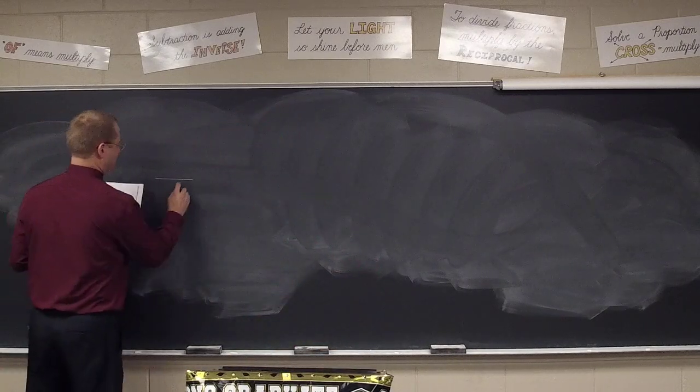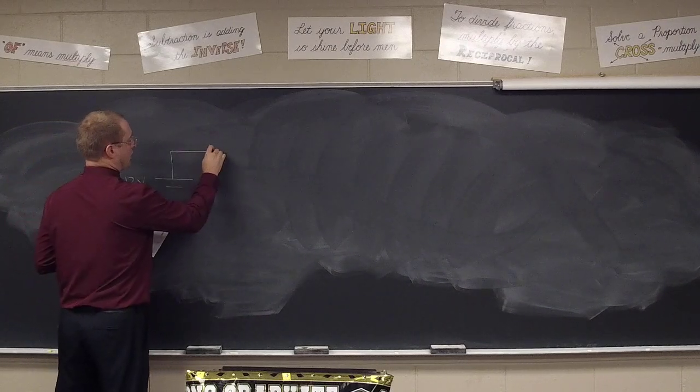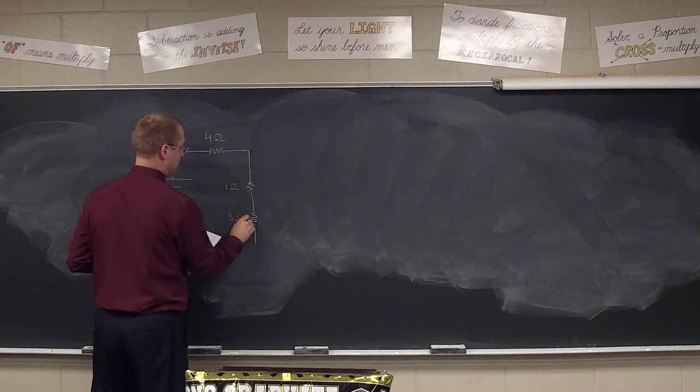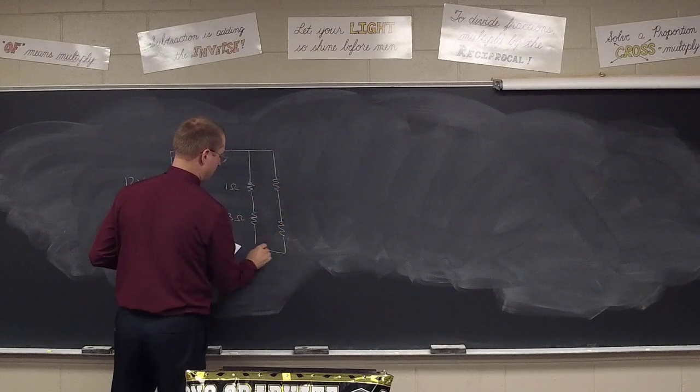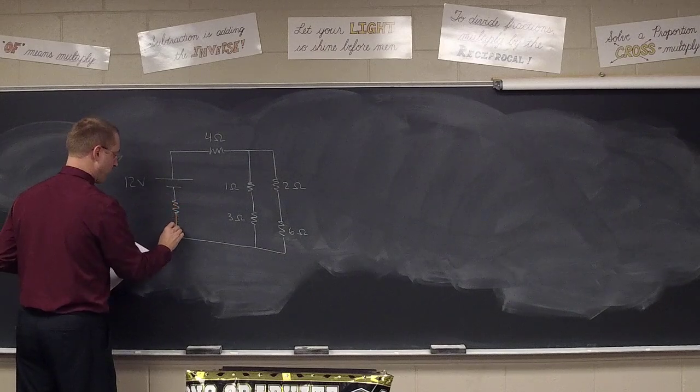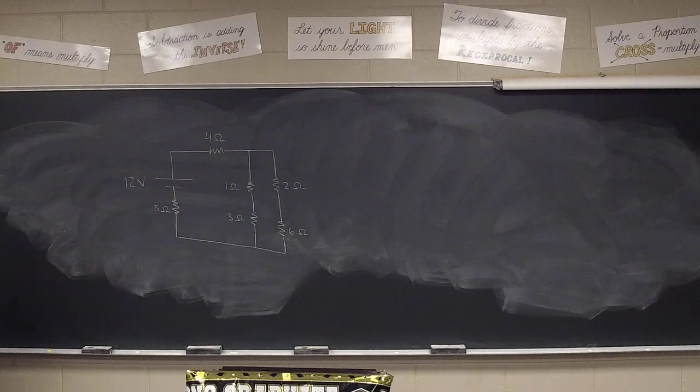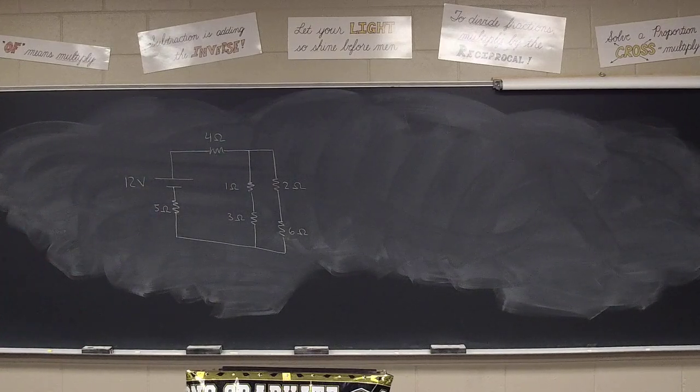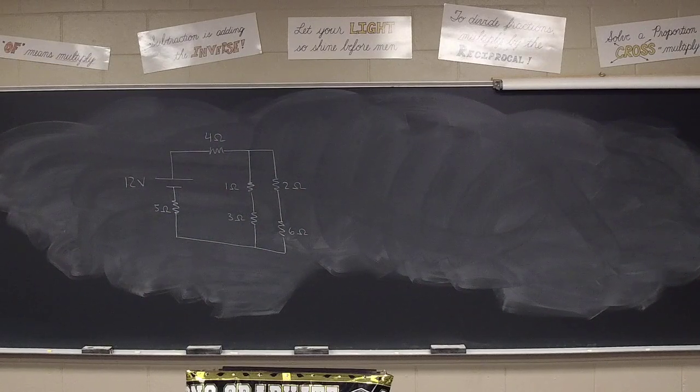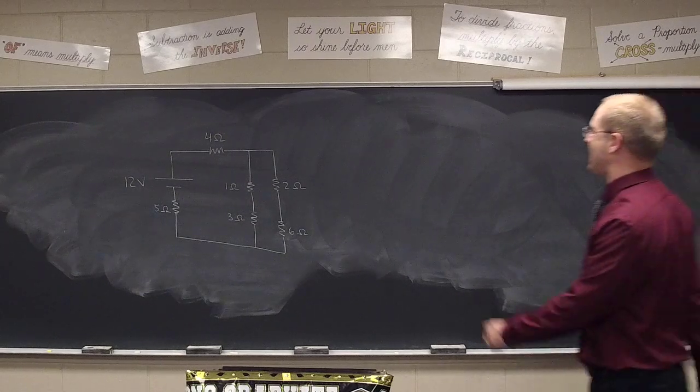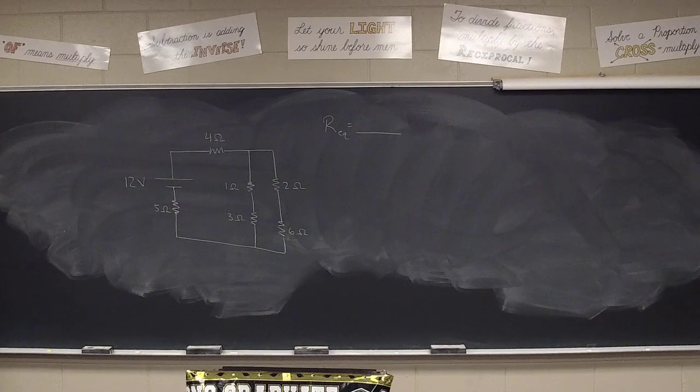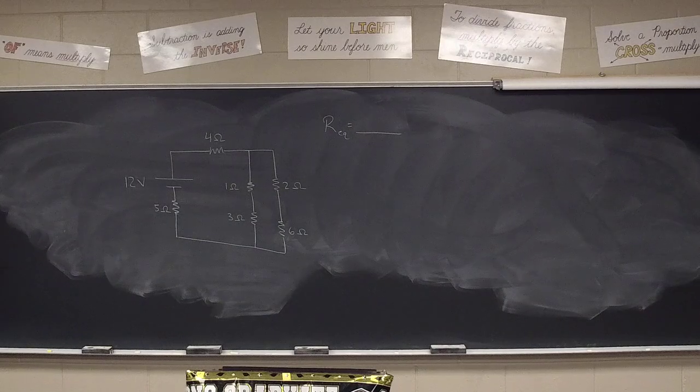So you had for homework a network to solve last night. I said we started you off with a 12-volt battery. We had the current going through a 4-ohm resistance. And then the current split. It had a pathway with a 1-ohm resistance and a 3-ohm resistance. It had a separate pathway next to it that had a 2-ohm resistance and a 6-ohm resistance. The current then reconnected. And on its way back to the battery, it ran into one final resistance of 5 ohms. All right, so let's see how we did on that homework. Let's take a look here. It all hinges on this first number. You blow the first number, you blow the whole problem. Don't blow the first number. We've got to get the equivalent resistance. And, well, talk me through getting the equivalent resistance.